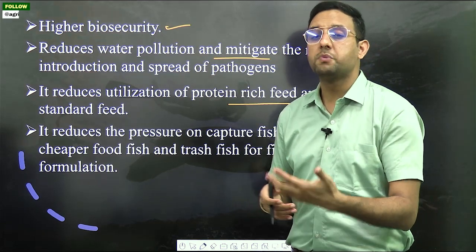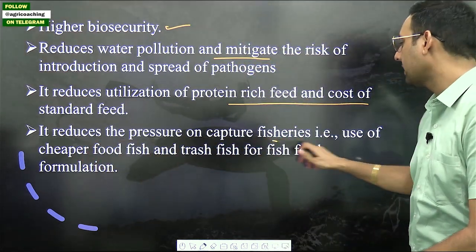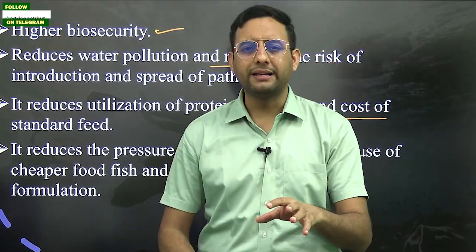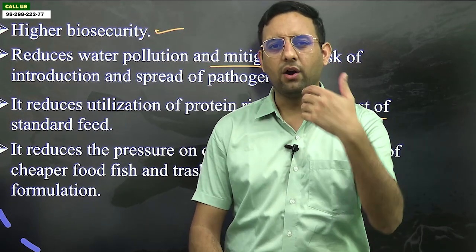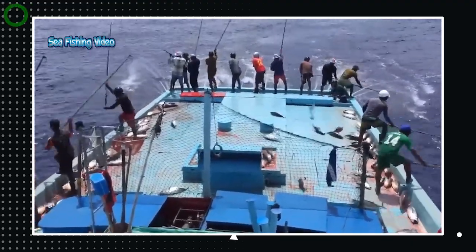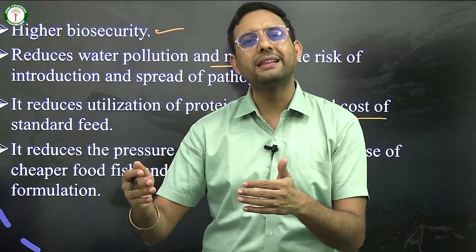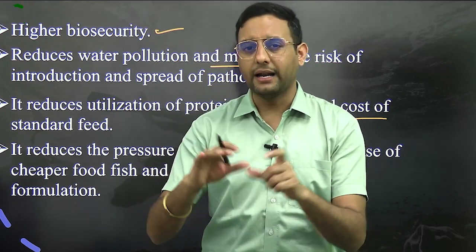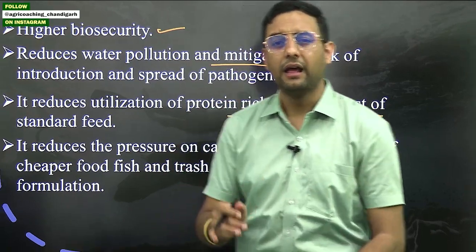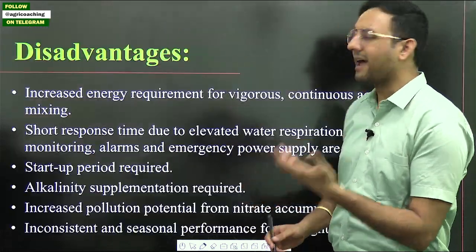Fifth, higher biosecurity — rearing multiple species secures aquatic biodiversity. Sixth, it reduces water pollution since water is not changed repeatedly. Seventh, it reduces the cost of protein-rich feed since fish eat bacteria. Eighth, it reduces pressure on capture fisheries — if more fish are cultured, fewer fish need to be captured from rivers, lakes, and marine environments, protecting wild fish populations.